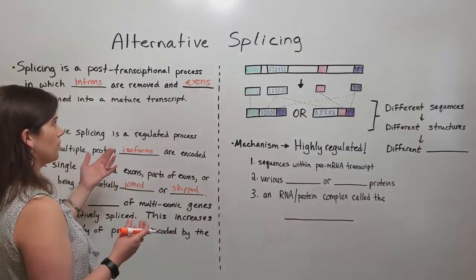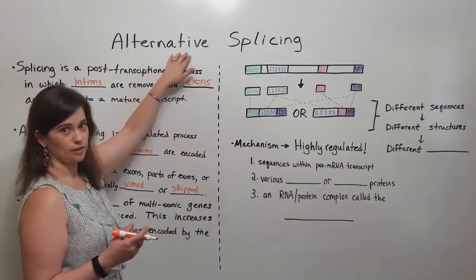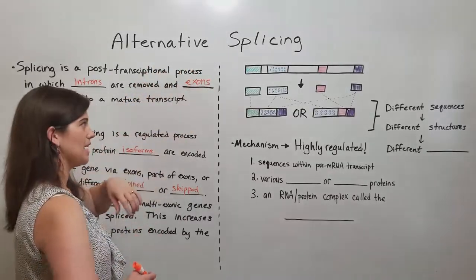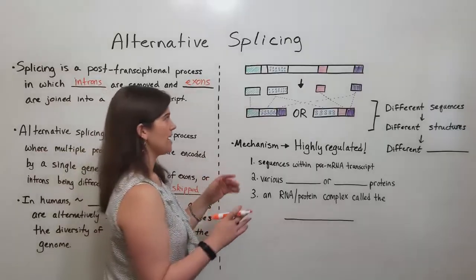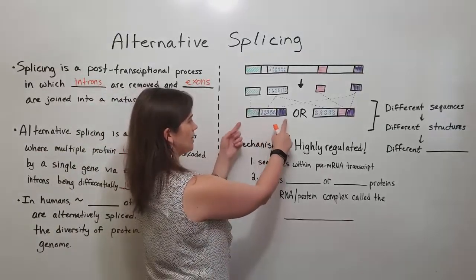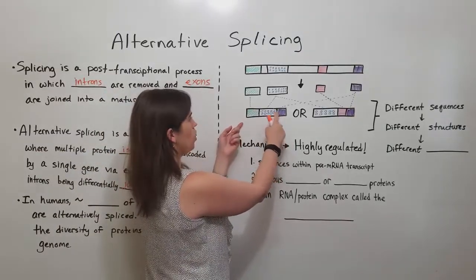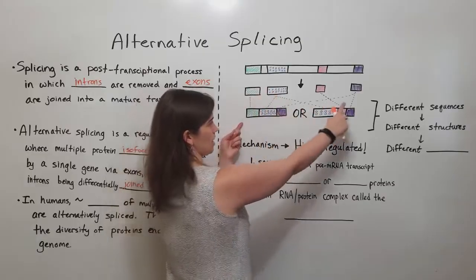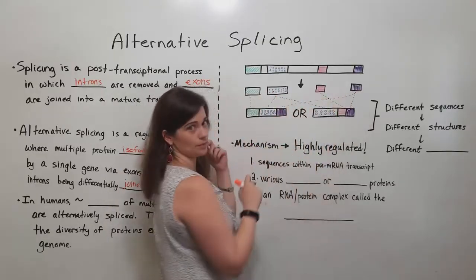This is one of the reasons why a synonym of alternative splicing is differential splicing — the exons can be joined or skipped in different ways. So for example, in this isoform we have this exon, this exon, and this exon, but this one has been skipped.